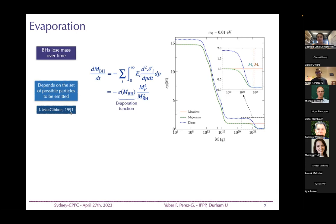The evaporation function tells you that depending on the degrees of freedom that exist, the black hole can evaporate faster or not. For example, for neutrinos: if the black hole temperature is smaller than the particle mass, there is a large Boltzmann suppression of emission. Dirac neutrinos have two more degrees of freedom than Majorana, so you see a difference between those cases — this is dependent on the actual neutrino masses.